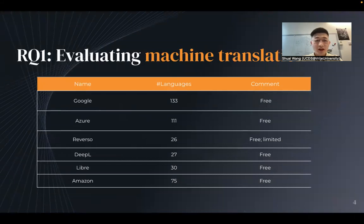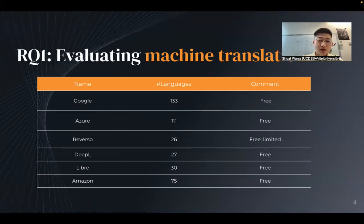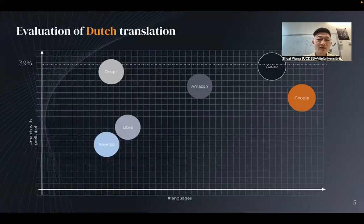We first performed a round of tests of existing state-of-the-art machine translators, including Google, Azure, DeepL, Libra, and Amazon. We saw that they can handle different numbers of languages.